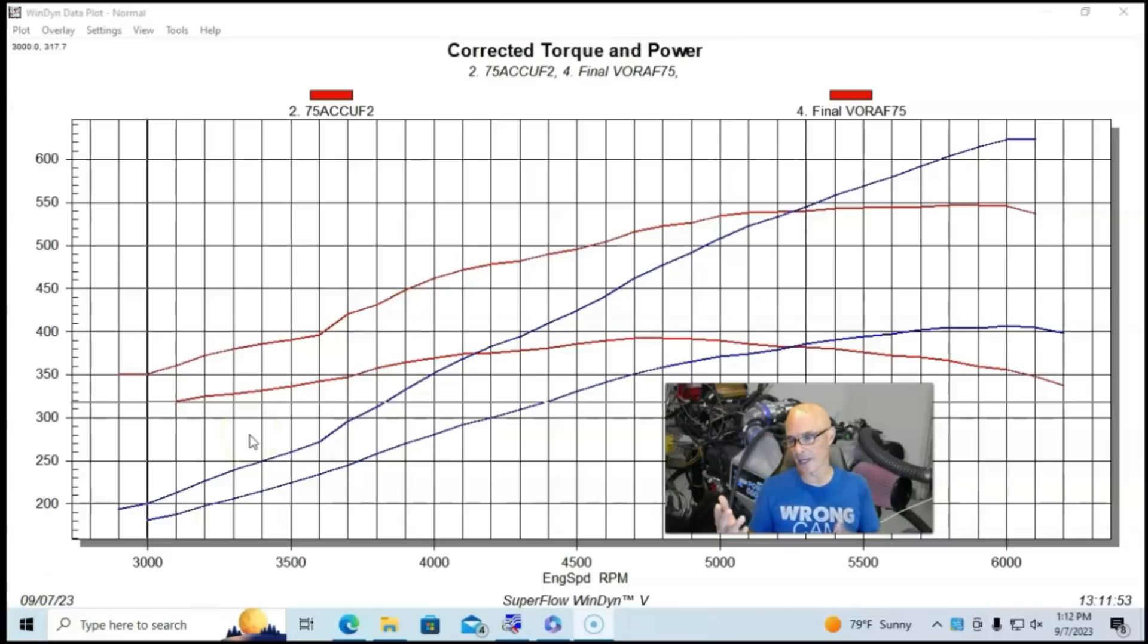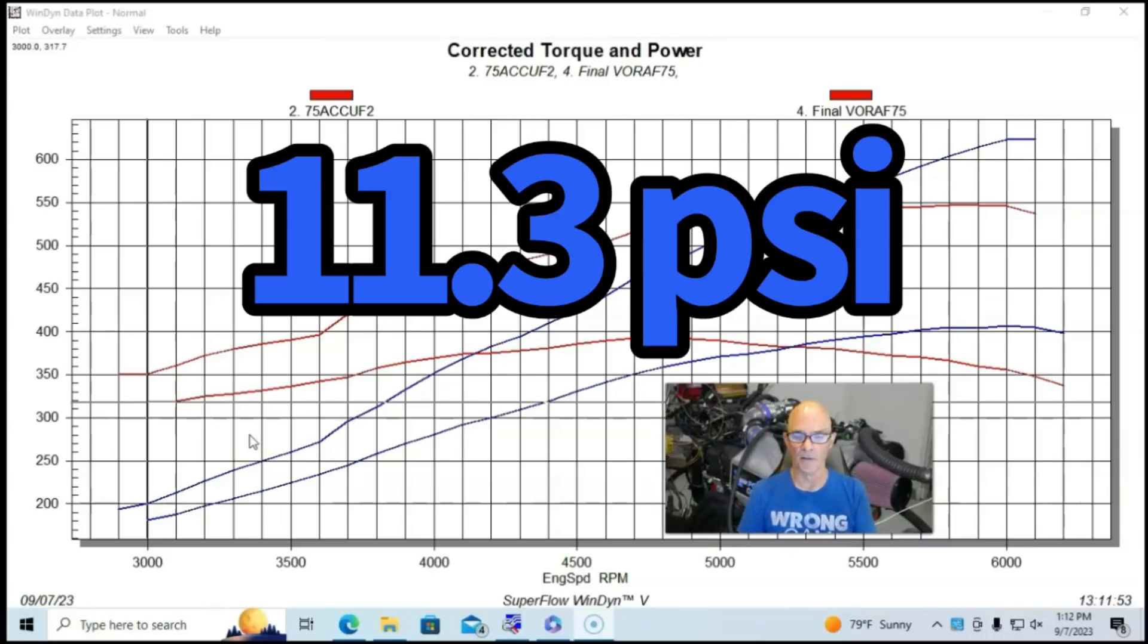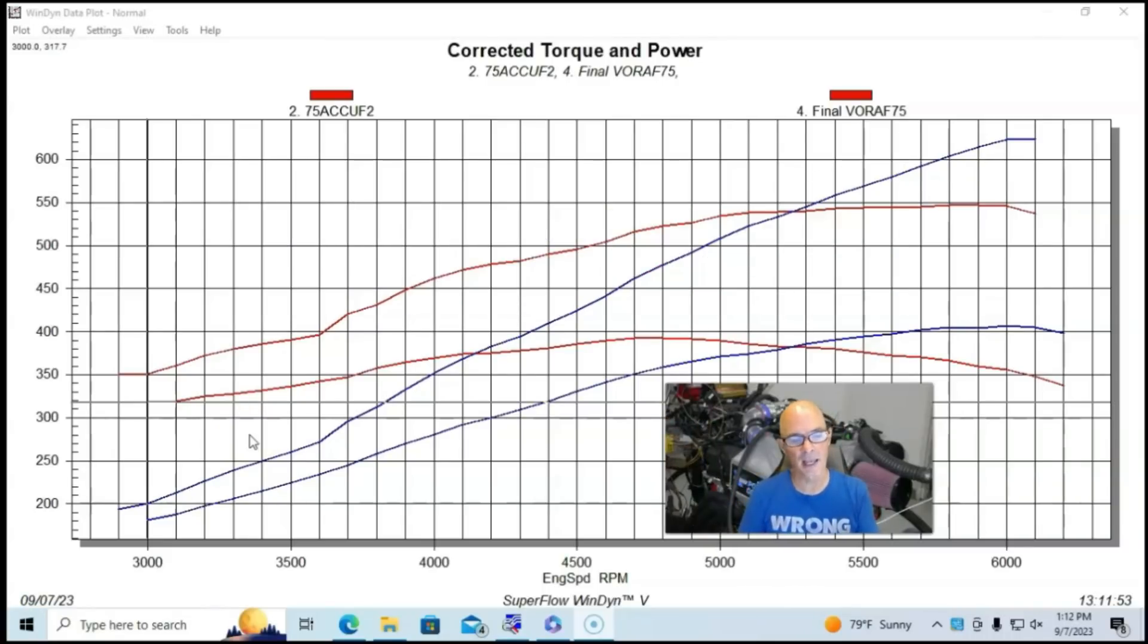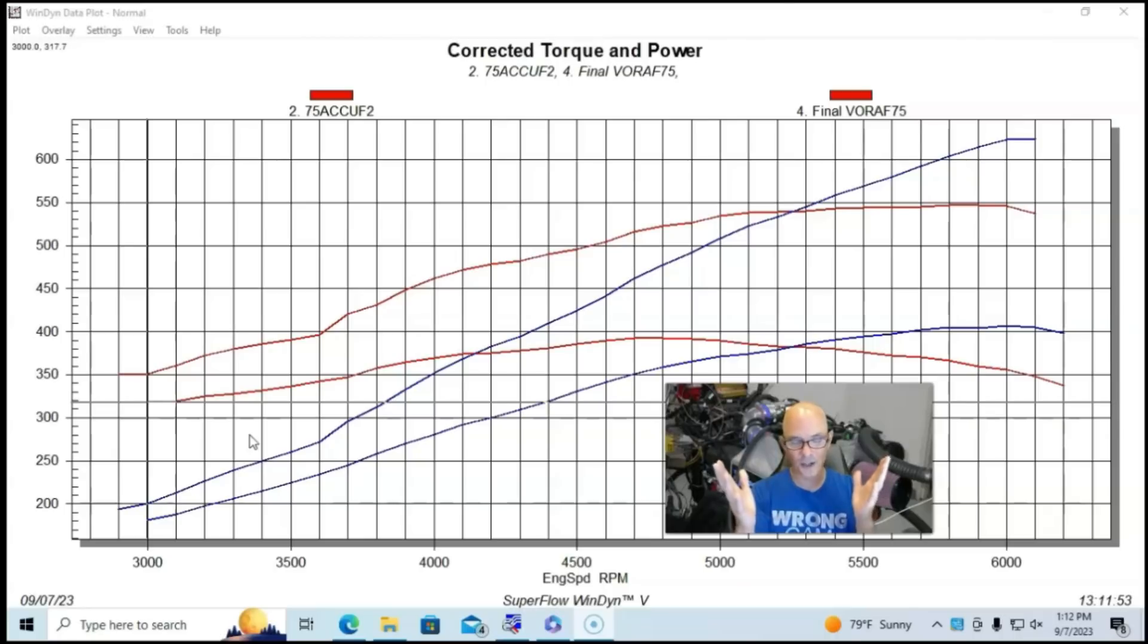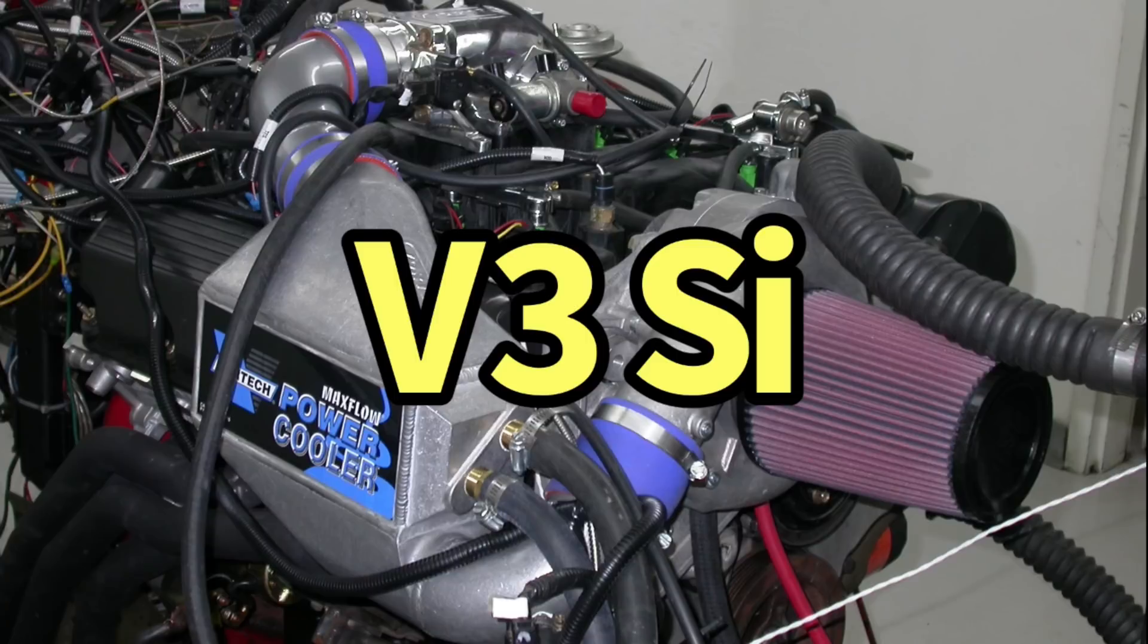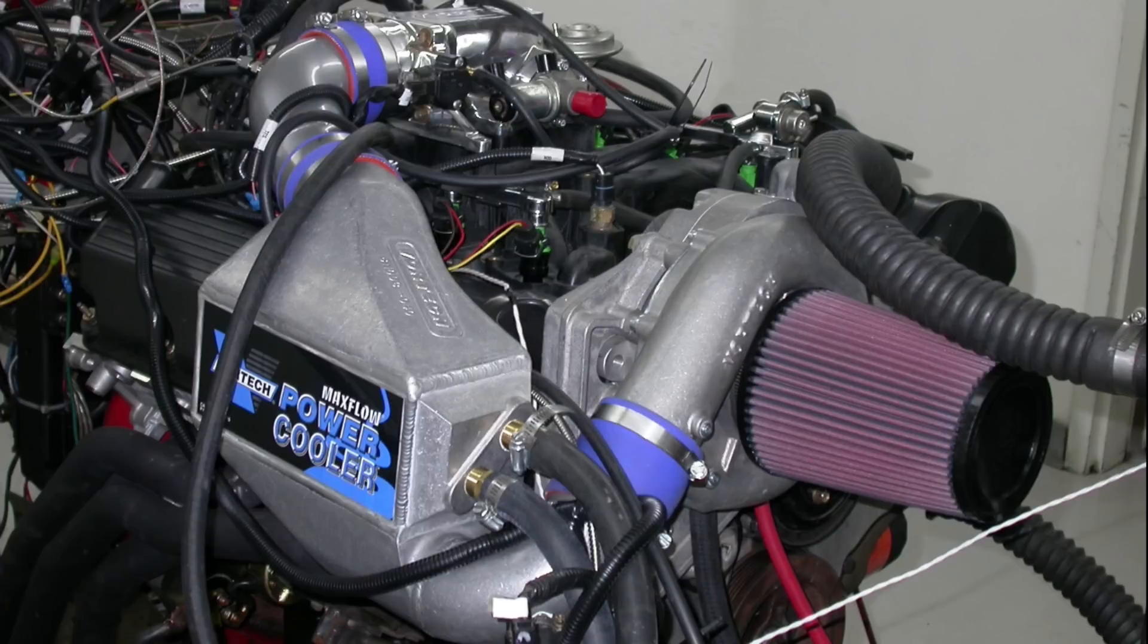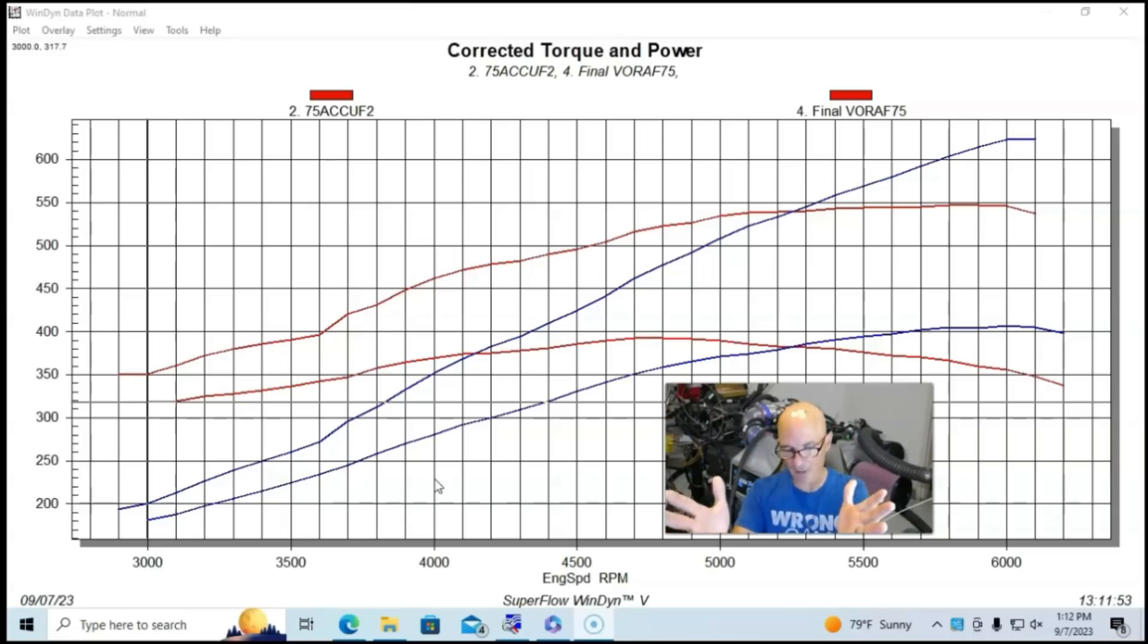For those that are interested, this is run at a peak boost out here at 6,000 or 6,100 of 11.3 PSI. The Vortec kit supplied by Vortec came with the air to water intercooler or aftercooler, if you will, or charge cooler. And it also had a pulley combination that produced, like we said, 11.3 pounds on this combination.